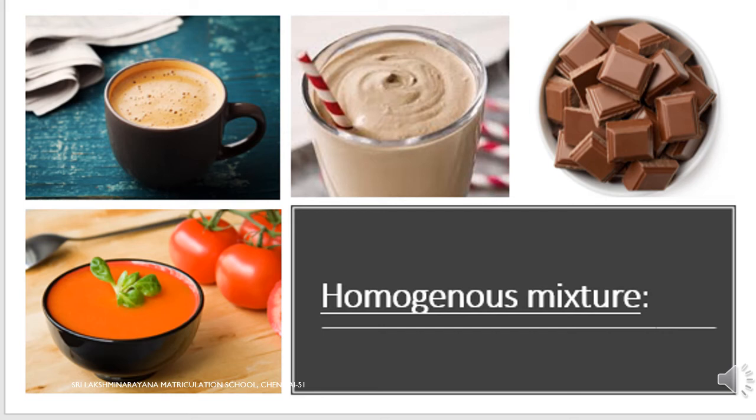First, let us have a look at homogeneous mixture. Here are some examples of homogeneous mixture. Let us consider the first image — it is a cup of coffee. The ingredients we need are: coffee powder, milk, water, and some sugar. Suppose if I want to separate only the sugar from the cup of coffee, can I separate the sugar? No. So, when a substance is formed by adding many different components and you are not able to distinguish them, then that kind of mixture is called a homogeneous mixture.